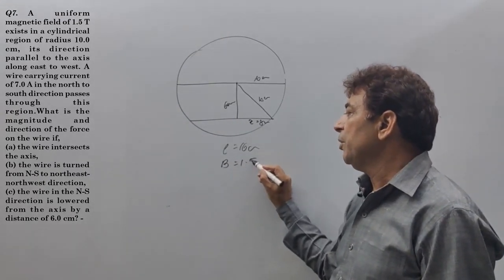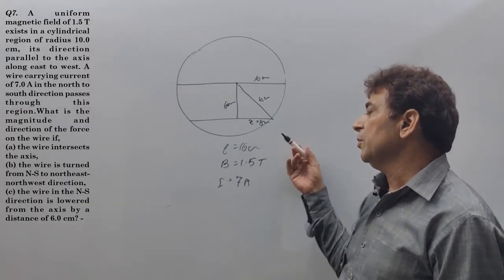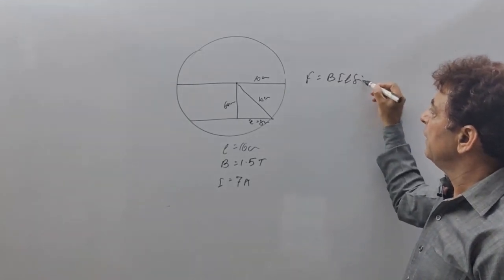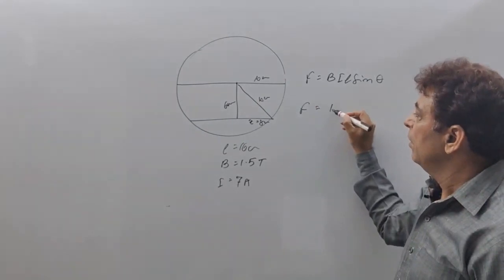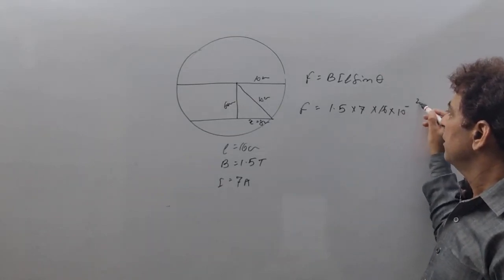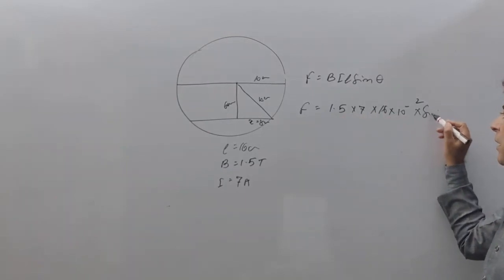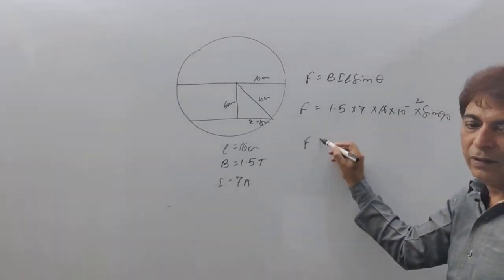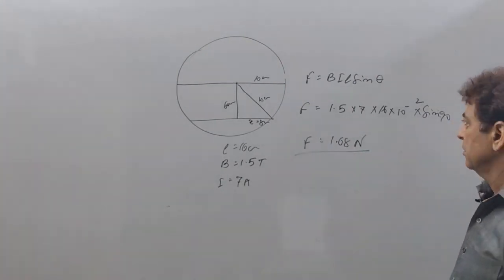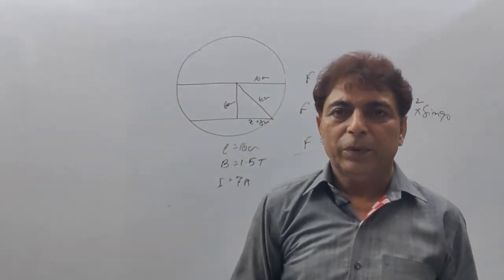And the magnetic field is 1.5 tesla. Current is 7 ampere, and of course 90 degrees again. So F equal to BIL sine theta, F equal to 1.5, 7, length 16 centimeter, sine 90, and the value comes out to be 1.68 newton. I hope this is clear.